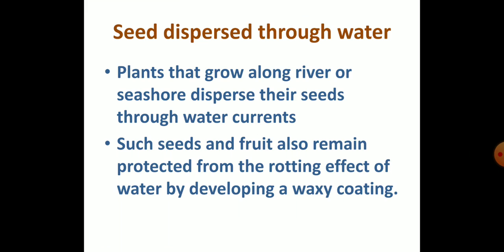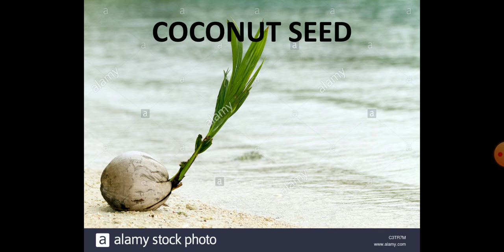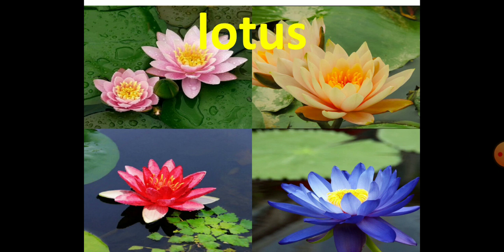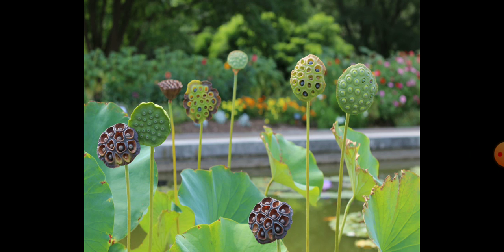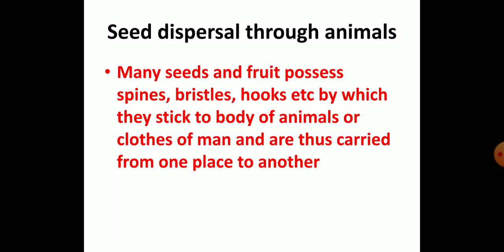Water-dispersed seeds are not too heavy and can be carried floating by the water current. For example, coconut seed, trappa seed, and lotus seed. All these are examples of seeds that are carried by water currents.